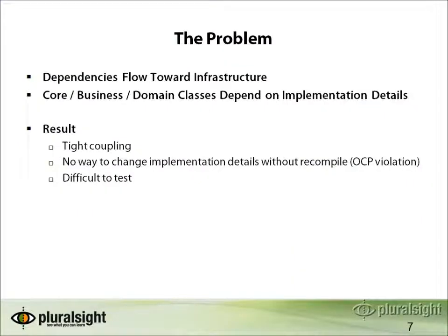Let's analyze some of the problems with the existing application structure. The biggest one is that dependencies tend to flow toward infrastructure concerns such as the database and XML files, through data access layers tightly coupled to these structures. The core business layer and domain classes all depend on these implementation details. If these implementation details change, it requires us to change the business layer — at the very least recompiling it, but often actually touching many individual method calls to fix references.